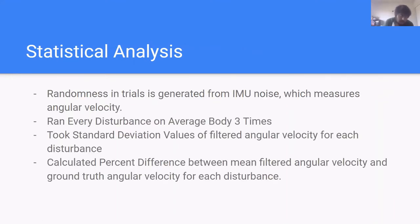For statistical analysis, we found out that randomness in trials is generated from the IMU noise, which measures angular velocity. This value is then filtered and fed into our PID controller. So to examine the effect of randomness in our trials, we could have just examined filtered angular velocity. To do this, we ran every disturbance on average body three times. We took the standard deviation values of filtered angular velocity for each disturbance. And then we calculated percent difference between mean filtered angular velocity and ground truth angular velocity for each disturbance.